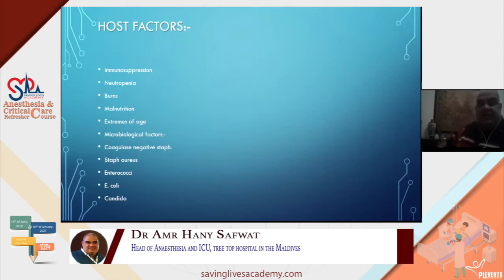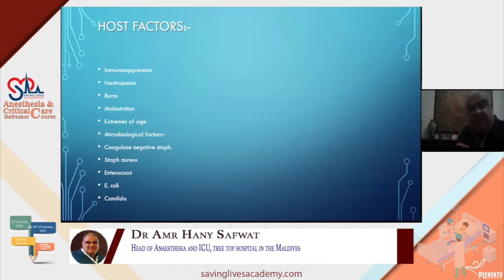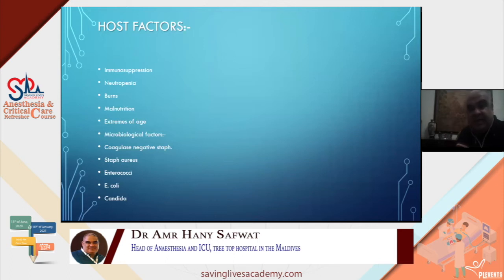Patient factors that increase catheter-related bloodstream infection risk include immune suppression, neutropenia, burns, malnutrition, and extremes of age. Microbiological factors include coagulase-negative Staphylococcus, Staph aureus, Enterococci, E. coli, and Candida species — these are the organisms typically seen in bloodstream infections in these patients.